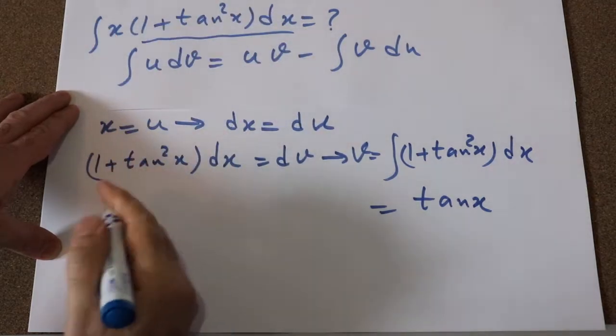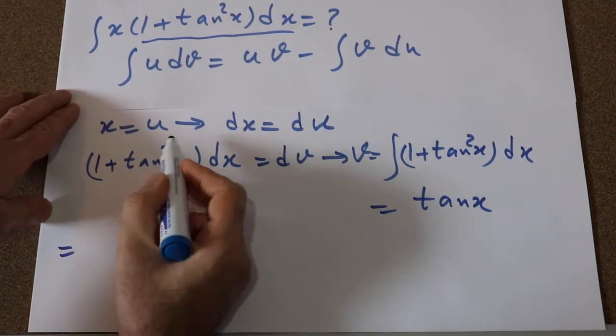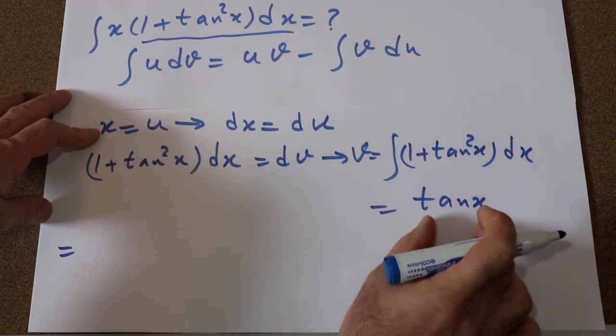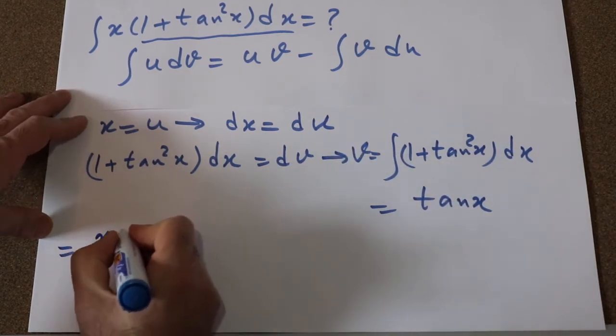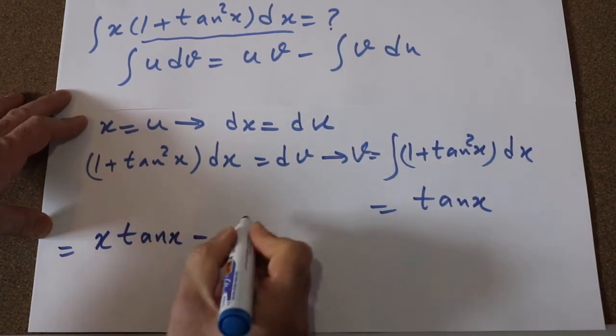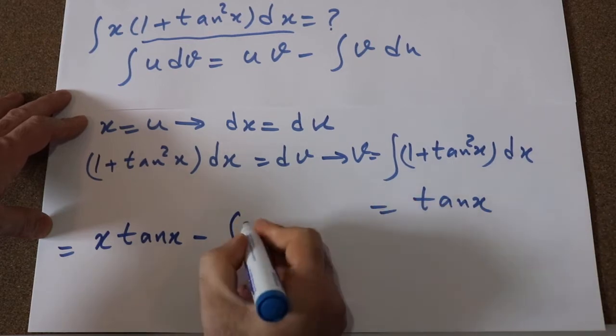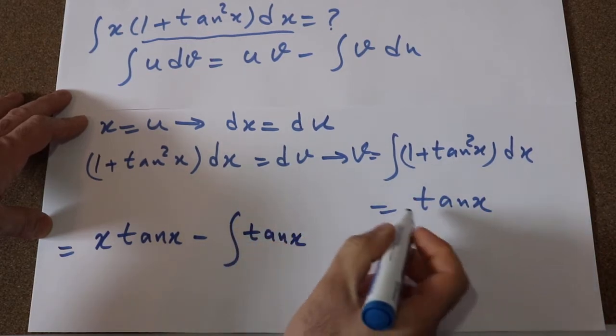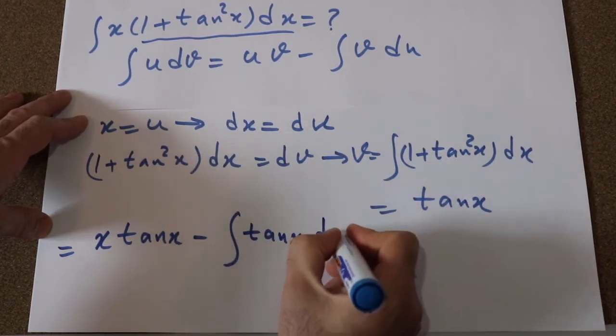Therefore, this integral will be equal to uv, that is x times tangent x, because v is equal to tangent x, so uv x tangent x minus integral of v, that is tangent x times du, and du is equal to dx.